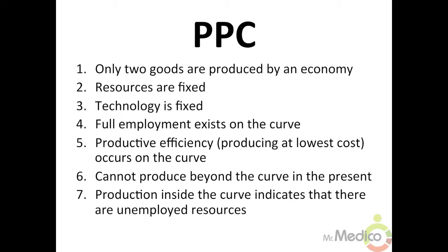Six, cannot produce beyond the curve in the present. Seven, production inside the curve indicates that there are unemployed resources.